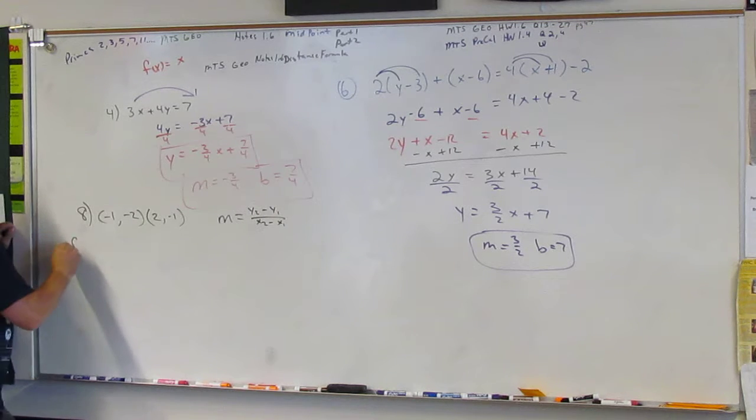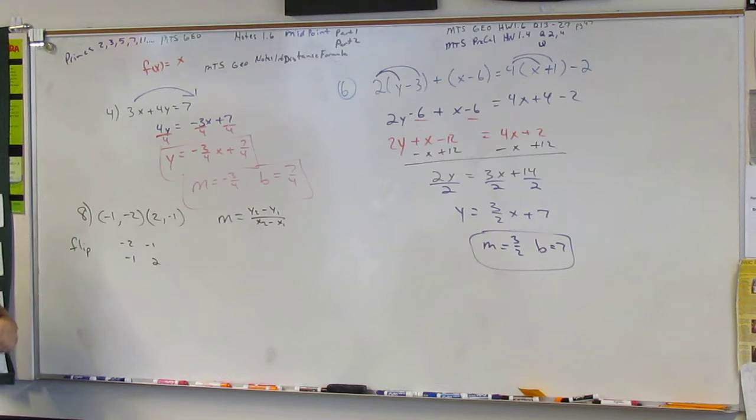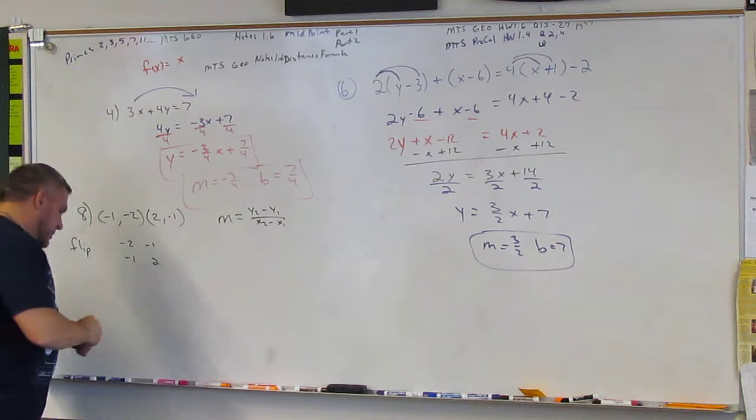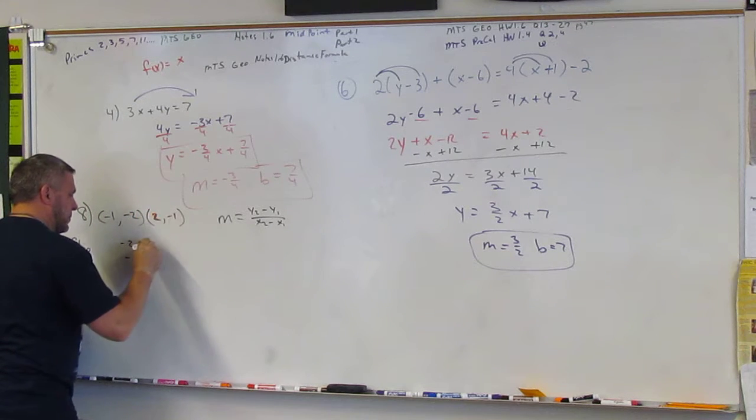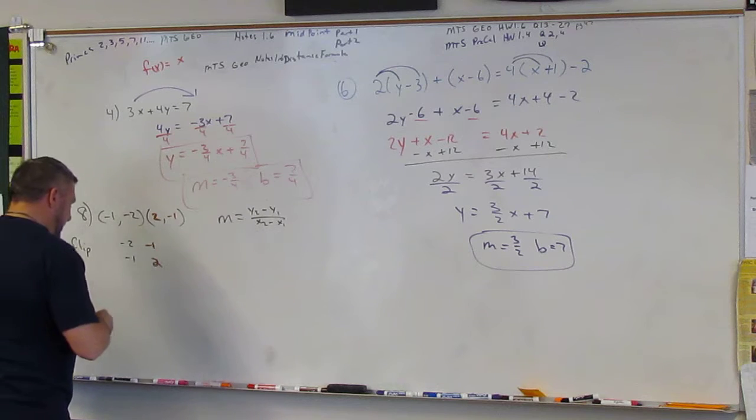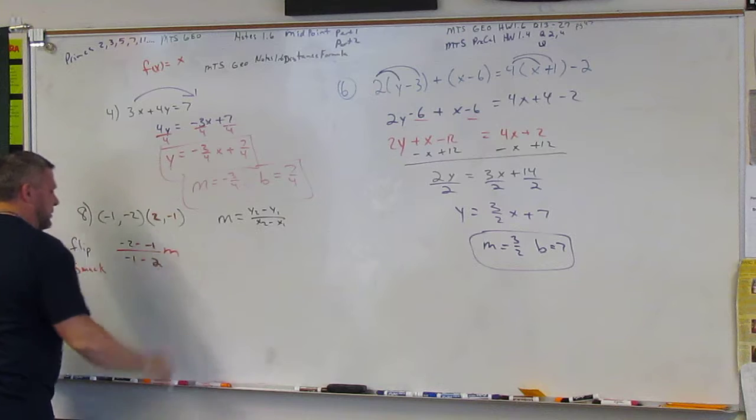Flip it. Negative two over negative one. Negative one over two. Remember? The y is over the x. Okay? So if you want, you can make these two different colors. So you can see which one went where. Flip it. Okay? Flip it and smack it. Okay? That means a smack and a smack and run. There's your m. Okay?